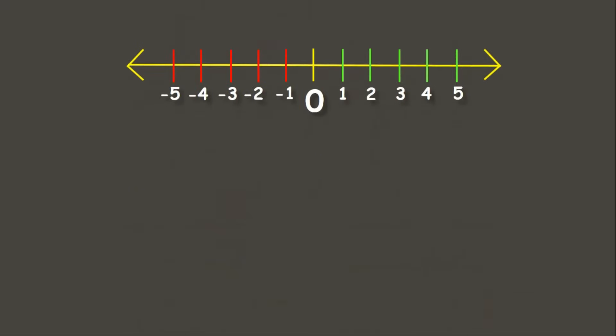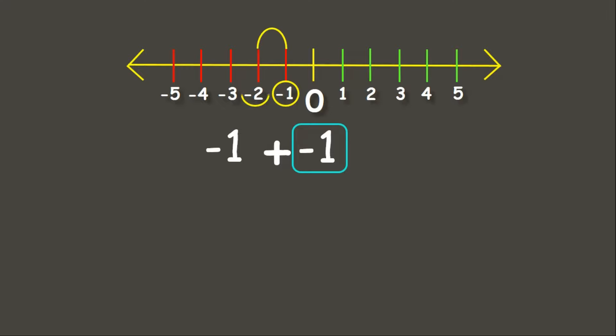Now let us try some more. This time, let us solve negative 1 plus negative 1. We are adding both negative integers. Our first addend is negative 1 and we are going to add negative 1. Since this is a negative integer, instead of moving to the right, we move to the left — one unit to the left. Now we got negative 2.